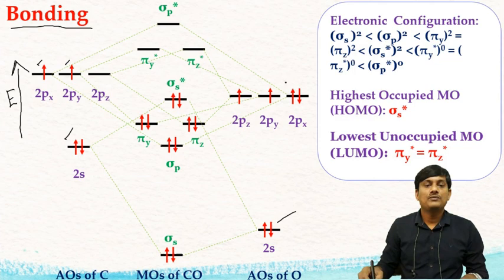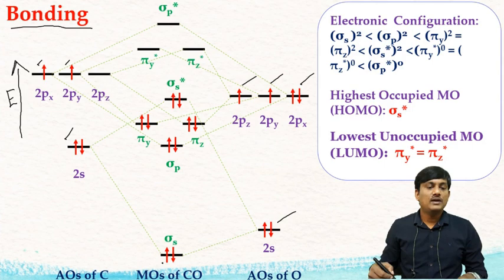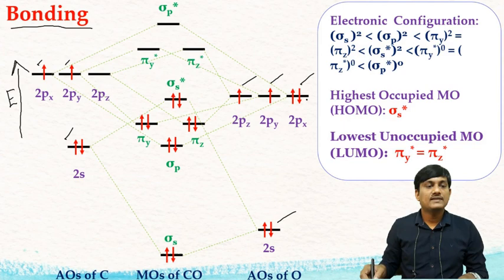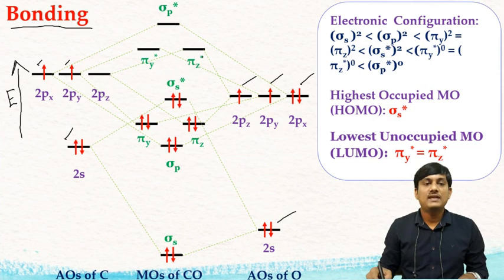The electronic configuration of oxygen is 2s² 2px² 2py¹ 2pz¹. When there is a linear combination of the 2s orbital of carbon and 2s orbital of oxygen, there is formation of σs and σ*s bonding and anti-bonding orbitals. There is also linear combination between 2px, 2py, and 2pz orbitals, forming sigma-type and pi-type bonding orbitals: σp, πy, πz, π*y, π*z, and σp*.